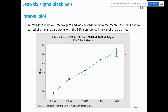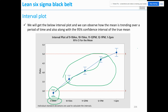Now we will get the interval plot. From 9 to 10 a.m., this is how the data is distributed — the mean is around 2-point-something, and these two lines indicate the 95% confidence interval with lower and upper limits. You can see the data is trending across the time periods.